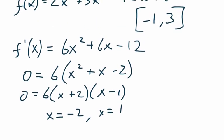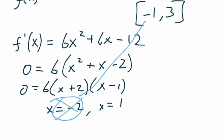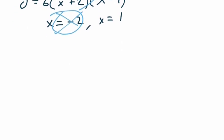And the nice thing here is, this x equals negative 2 is not included in our interval so we can actually ignore it as a candidate. And this means that there's only three candidates here. We have the endpoints.